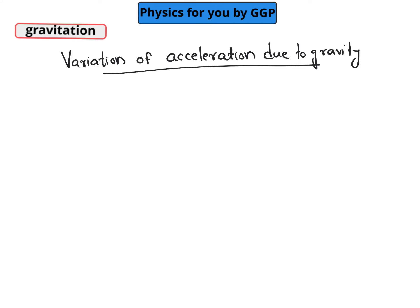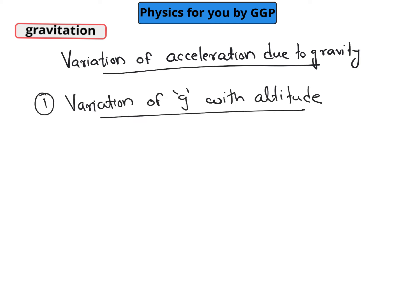On the next part, we will discuss what are the parameters which may affect the value of acceleration due to gravity, or variation of acceleration due to gravity. On the first part, we are going to discuss what is variation of acceleration due to gravity with altitude or with respect to height.